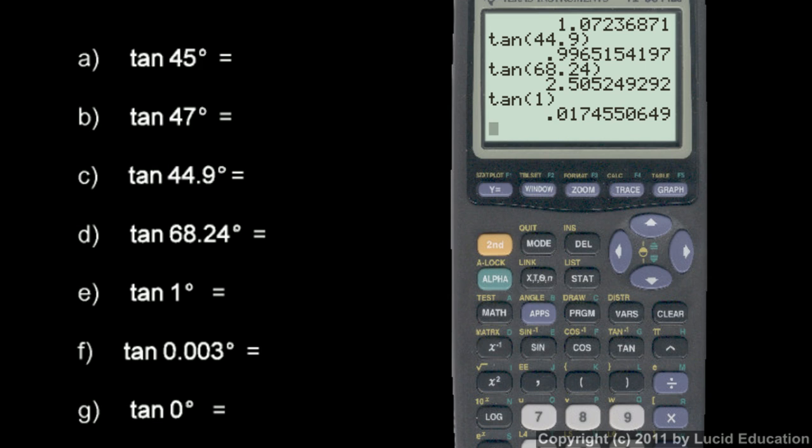And watch this. The tangent of 0.003 degrees. A very small angle. And look what we get. 5.236 times 10 to the minus 5th. That's a very small number.